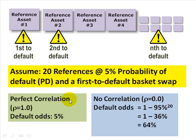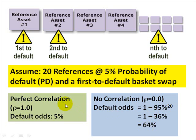Now consider reducing the correlation down to 0. At a correlation of 0, the odds of the basket defaulting equal 1 minus the odds of the basket not defaulting. The odds of the basket not defaulting are 95% raised to the 20th power — because each of the 20 bonds has to not default — which equals about 36%. So the odds of triggering are 1 minus 36%, or 64%. When we reduced from perfect correlation to no correlation, the odds of the basket swap being triggered increased to 64% from 5%.